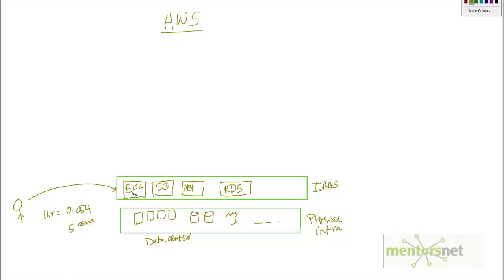We can call this layer Infrastructure as a Service. Using these services you can get access to physical infrastructure. The bottom line is that you don't have to go and get a machine and install it in your own data center — instead you can rent a machine from Amazon and get things done.